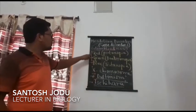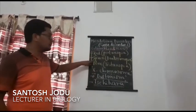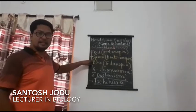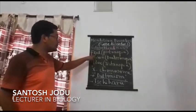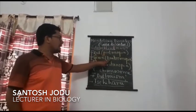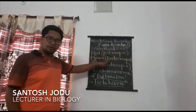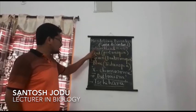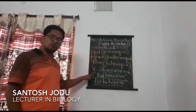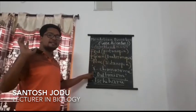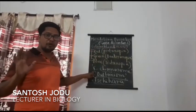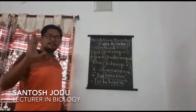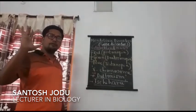Color blindness is also called daltonism. The most common types are red color blindness (protanopia) and green color blindness (deuteranopia). The gene for color blindness is present on the X chromosome, hence color blindness is an example of an X-linked recessive trait and follows the crisscross pattern of inheritance.